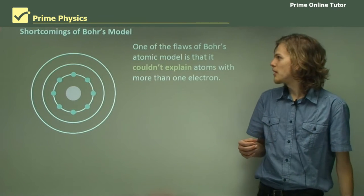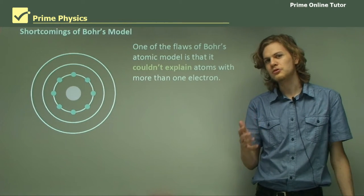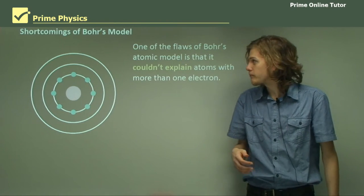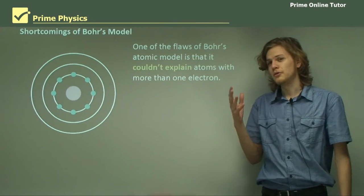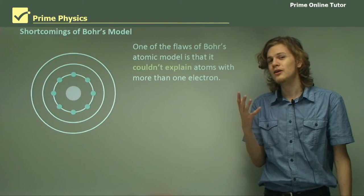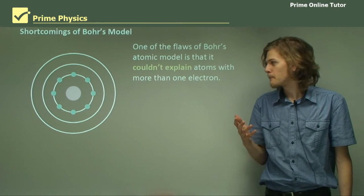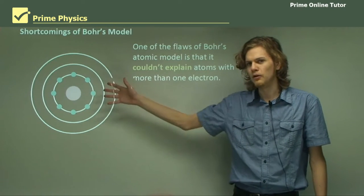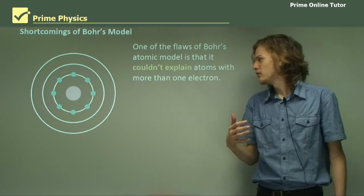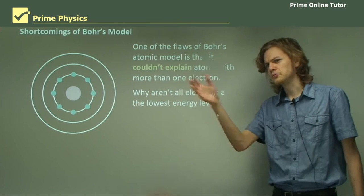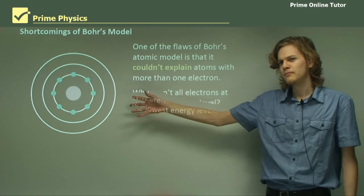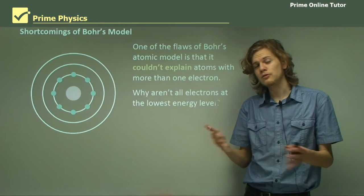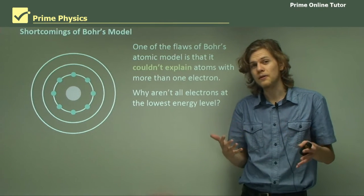To start with, let's talk about some of the shortcomings of Bohr's model, which was the last model before quantum physics started coming into play. One of the flaws of Bohr's atomic model is that it couldn't explain where the electrons were in an atom. He knew that if there was one electron it had to always be in the middle one, but wouldn't they all just drop to the lowest energy level? But that wasn't observed to happen, because if it did, then the spectral lines of the different elements would have been very different.